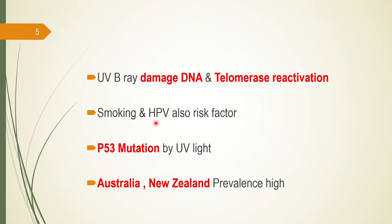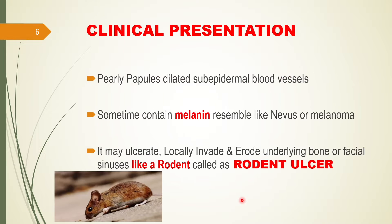HPV, particularly E6 and E7 proteins, will inhibit P53 and RB gene function, so the patient can develop carcinoma. P53 can also be mutated by ultraviolet light. I will not go into detail of P53 and RB gene function as it is already covered in my tumor suppressor gene video. Australia and New Zealand peoples who are fair-skinned have a very high prevalence of BCC as compared to non-fair-skinned individuals.